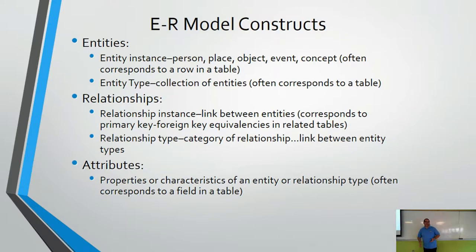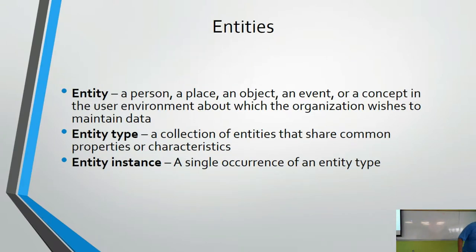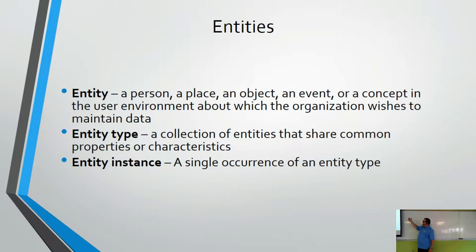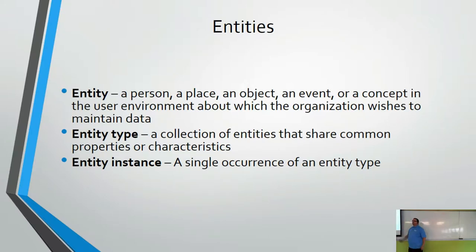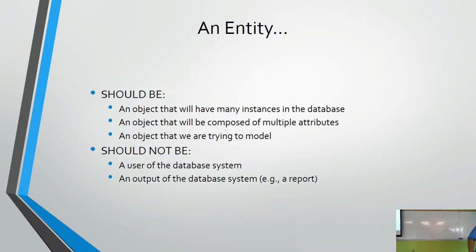To define these clearly: an entity is a person, place, or thing; an instance is each individual record (each of you); and the entity type is the collection — the category. If a test question asks for the definition of an entity type, that's the answer you want. An entity should be an object that will have many instances in the database — you don't model an entity for just one occurrence.